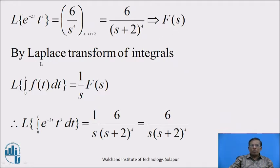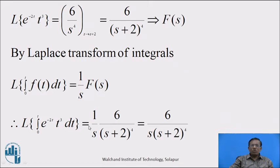Now, by the property of Laplace transform of integrals, Laplace of integration with limit 0 to t of f of t dt equals 1 upon s into F of s. By this property, Laplace transform of integration with limit 0 to t of e raised to minus 2t into t cube dt equals 1 upon s into 6 upon (s plus 2) raised to 4, which equals 6 divided by s(s plus 2) raised to 4. This is the required answer.